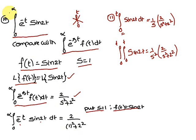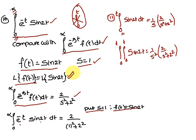Tenth problem: evaluate ∫[0 to ∞] e^(-t)·sin(2t) dt. Compare with the standard Laplace definition ∫[0 to ∞] e^(-st)·f(t) dt. Here s = 1 and f(t) = sin(2t). Laplace of sin(2t) = 2/(s² + 4). Substituting s = 1 gives the integral equals 2/(1 + 4) = 2/5.